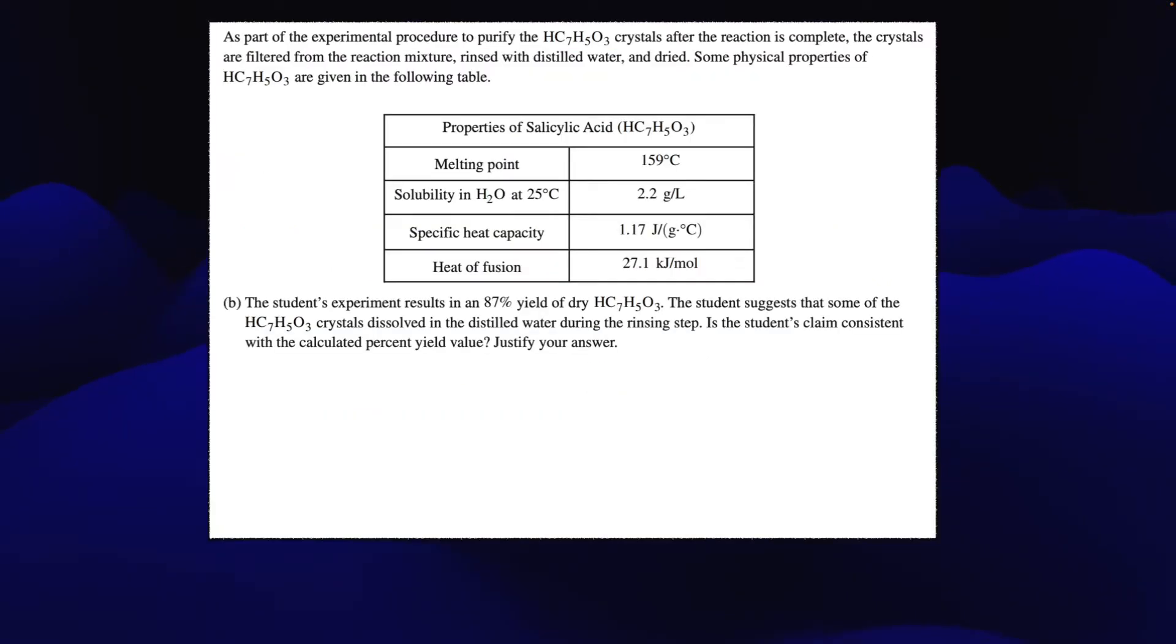All right, next. As part of an experimental procedure to purify these crystals after the reaction is complete, the crystals are filtered from the reaction mixture, rinsed with distilled water, and dried. Some physical properties are given below. Now for letter B, the student's experimental result is basically an 87% yield of our dried crystals. The student suggests that some of the crystals might have dissolved in distilled water during the rinsing step. Is the student's claim consistent with the calculated percent yield? Justify your answer.